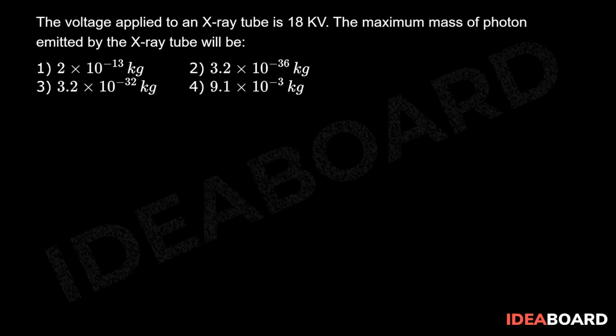For the mass, we need to use Einstein's mass-energy equation to find out the mass of this photon. The equation says ΔE is equal to Δm times c squared. So Δm, which is the mass of the photon emitted, is going to be ΔE divided by c squared.